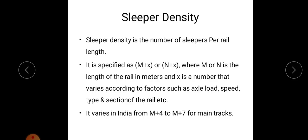So M or N is the length of rail. And in India the sleeper density varies from M+4 to M+7 for main track. For example, if the length of the main track is 13 meters, then what will be sleeper density? It may be 13+7, that is 20. 20 is the number of sleepers.